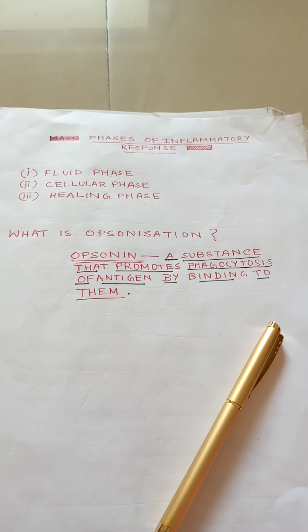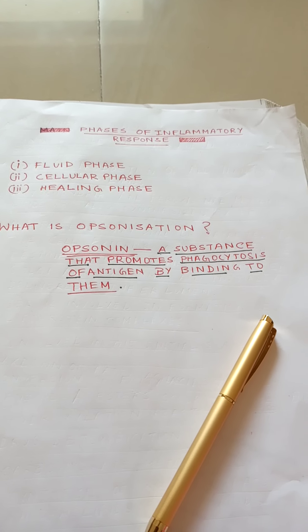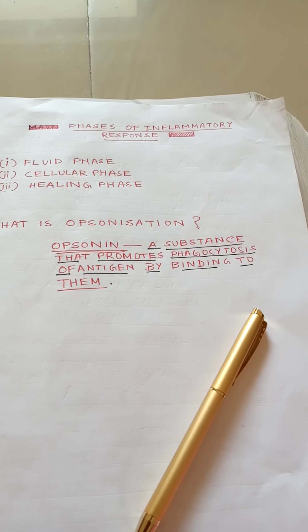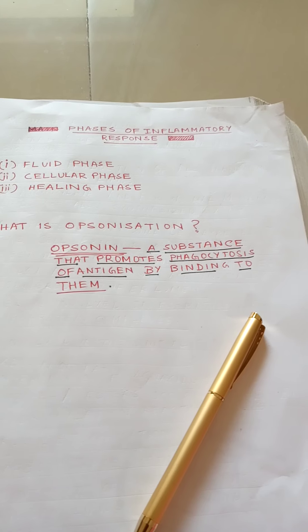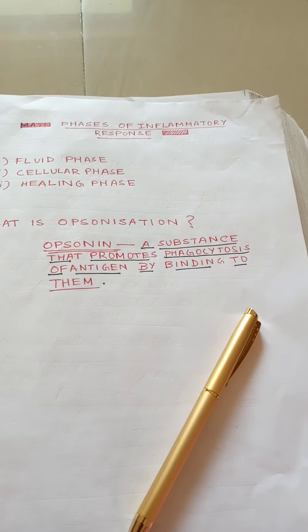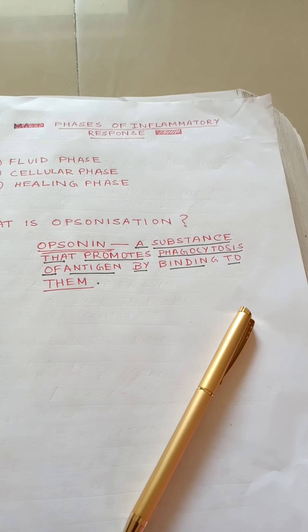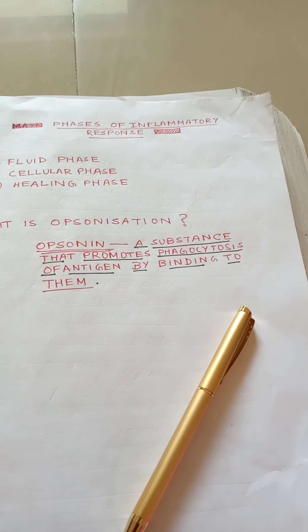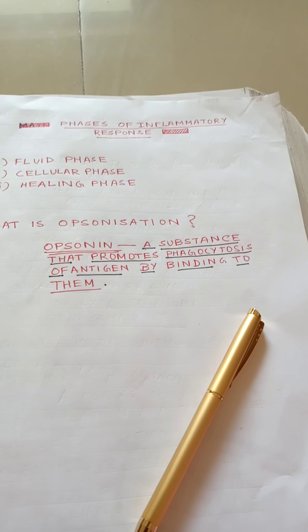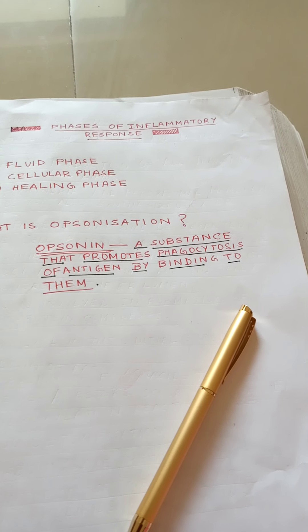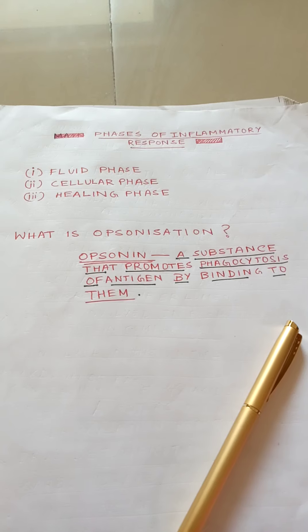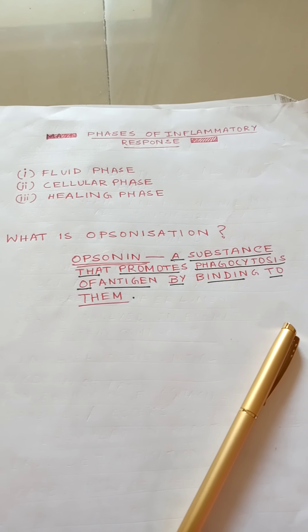Inflammation is a response that brings leukocytes and plasma molecules to sites of infection or tissue damage. The principal effects are an increase in blood supply, an increase in vascular permeability to large serum molecules, and enhanced migration of leukocytes across the local vascular endothelium in the direction of the site of inflammation. There are mainly three phases of inflammatory response: the fluid phase, the cellular phase, and the healing phase.